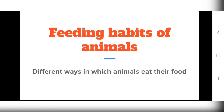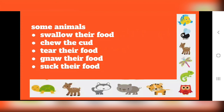Hello students, today I am here with the second part of lesson 6 on feeding habits of animals. Today we will be learning about different ways in which animals eat their food. Some animals swallow their food, some animals chew the cud, some animals tear their food, some animals gnaw their food, and some animals suck their food.